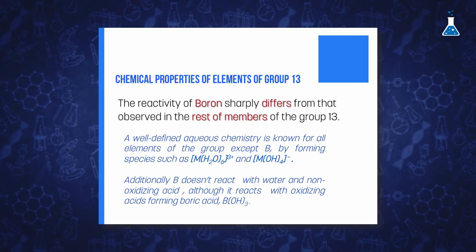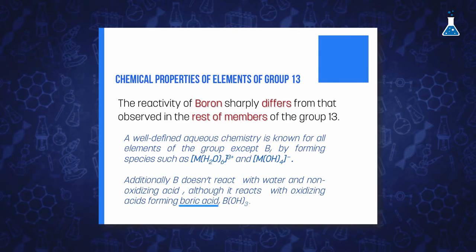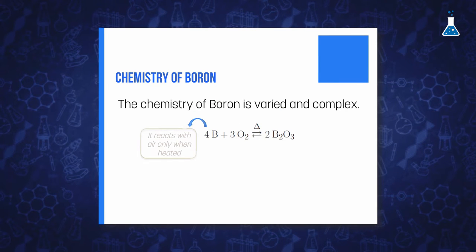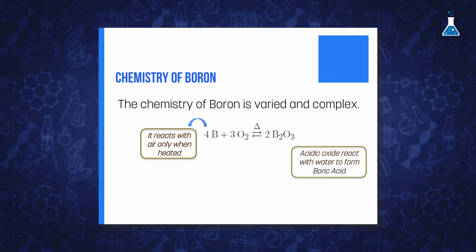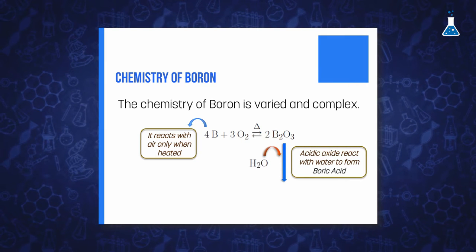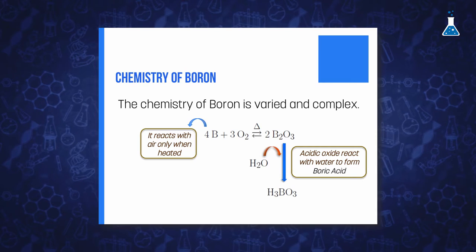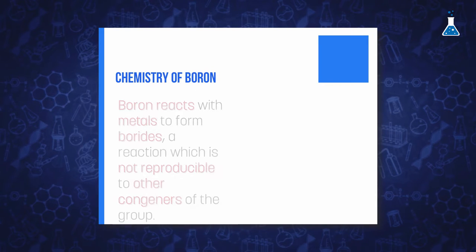Although boron reacts with oxidizing acids forming boric acid, it reacts with air only when heated to form diboron trioxide (B₂O₃). This species is an acidic oxide which reacts with water to form boric acid. This type of reaction, which is more typical for a non-metal element, shows the different behavior of boron with respect to the rest of the elements of the group.